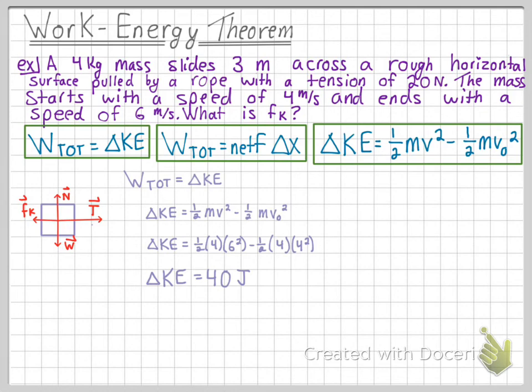Next, let's look at the left side of the work energy theorem. We must find the total work done on the object. Since we are analyzing the x direction, we know that there is a tension force in the positive direction and a kinetic friction force in the negative direction. We then must multiply this net force by the displacement.